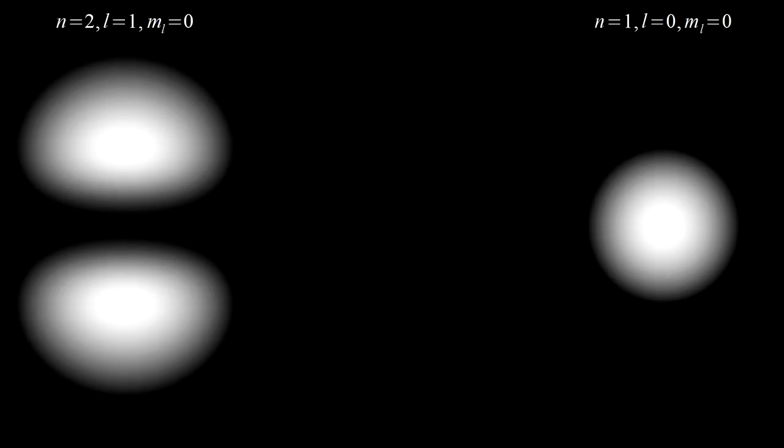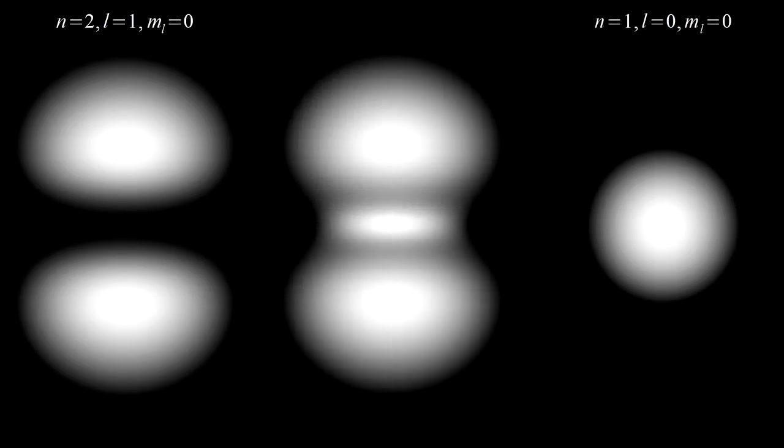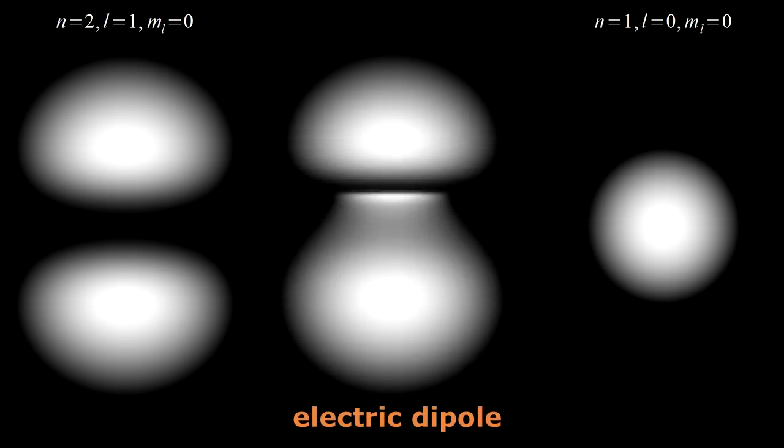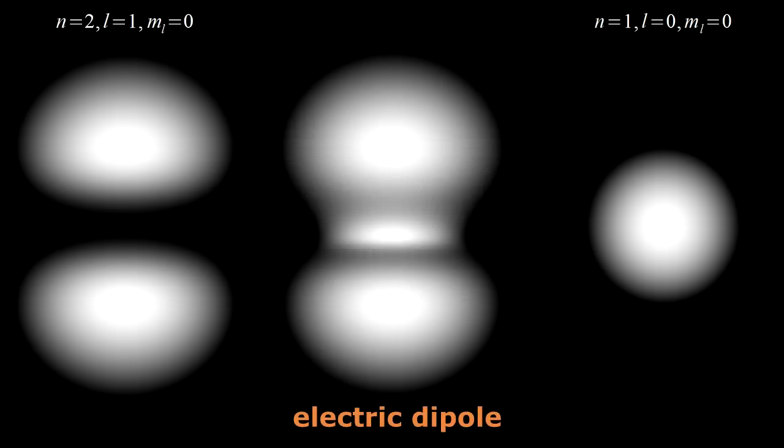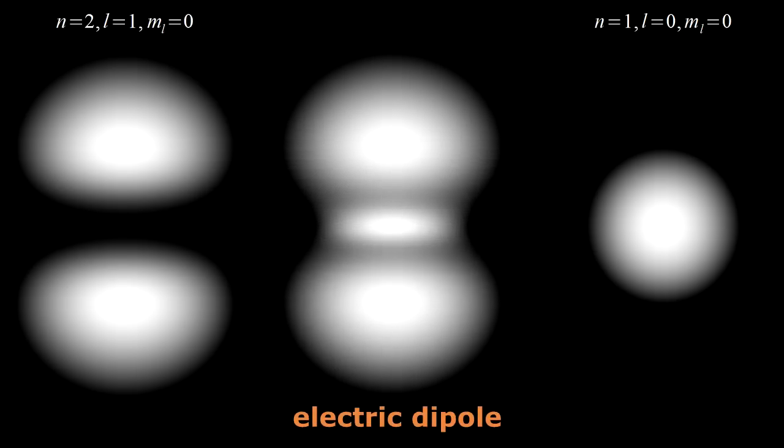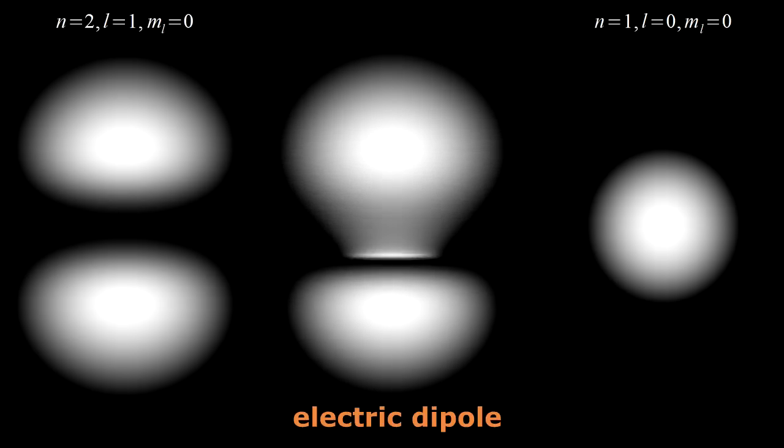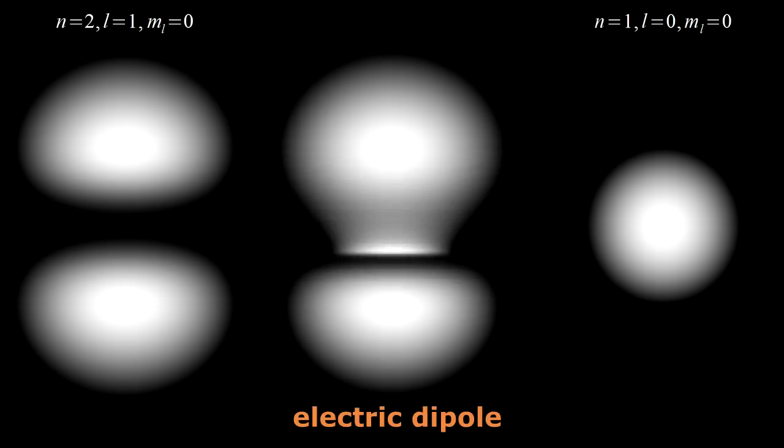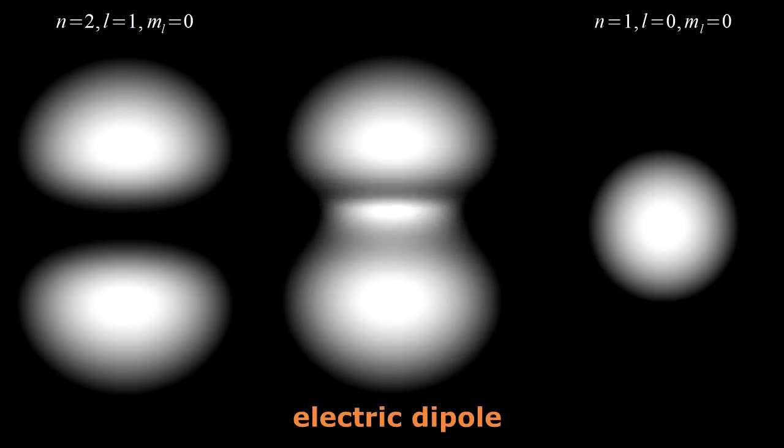In video six, we saw that combining stationary states of different energies, orbitals, creates an oscillating electron probability distribution. If this oscillation effectively forms a good radiating antenna, a so-called electric dipole, then it's possible to transition between these two orbitals by the emission or absorption of a photon. If the oscillation does not have this electric dipole characteristic, then single photon transitions between these orbitals will not occur.